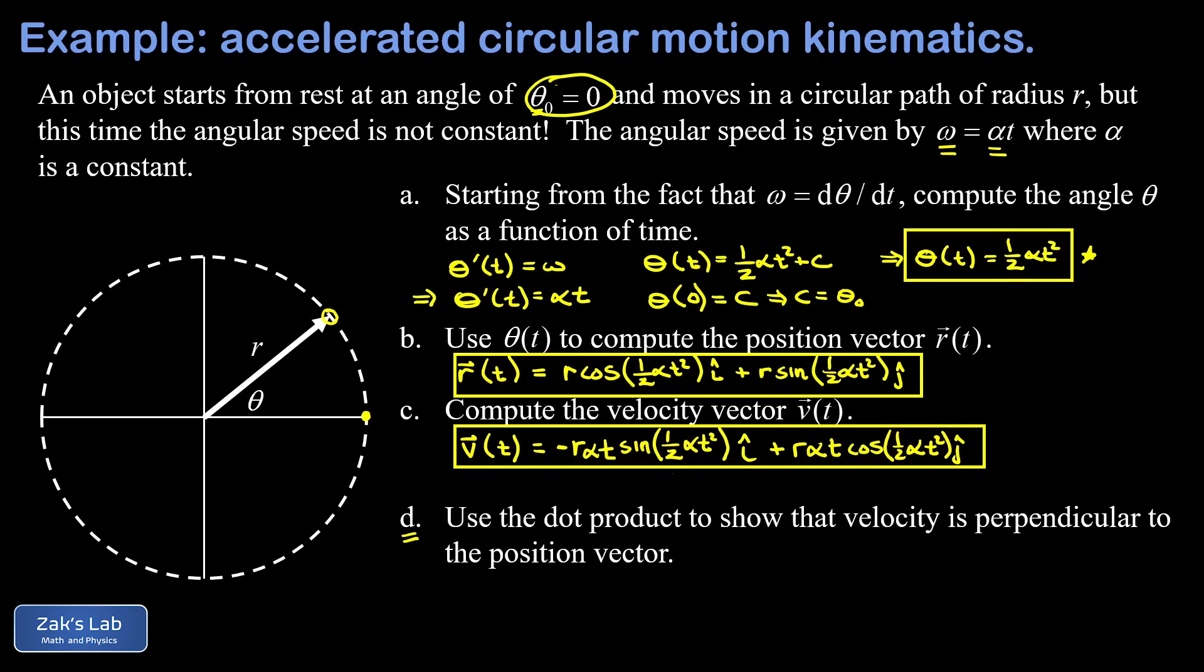We should take a moment to visualize what this velocity vector looks like. There's the velocity vector, and it should be tangential to the trajectory, which would make it perpendicular to the position vector.